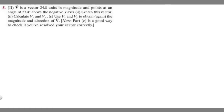In this problem, we're told V is a vector, 24.8 units in magnitude, and points at an angle of 23.4 degrees above the negative x-axis. For A, we're told to sketch this vector. B tells us to calculate V sub x and V sub y, and then C says to use V sub x and V sub y to obtain, again, the magnitude and direction of V.